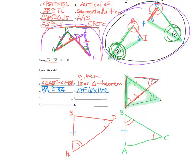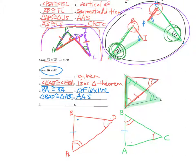What do you see? AAS. We can say that the triangles are congruent by AAS. Triangle BAD is congruent to triangle ACB — no arc, two arcs, one arc matching no arc, two arcs, one arc. So the triangles are congruent by AAS. Now AD is here and BC is here — that's what we were trying to prove congruent. Why are those congruent? CPCTC.